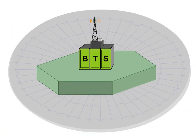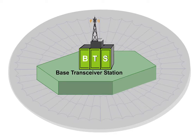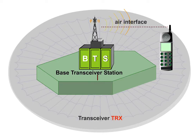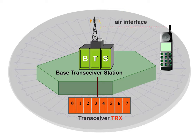The central element of one cell of this kind is a transmitting and receiving unit known as a base transceiver station, BTS. This makes the connection to the mobile station via the air interface and controls the transceiver, TRX. The transceiver, the central functional unit of the BTS, maintains calls to a maximum of eight mobile stations via one frequency pair each.